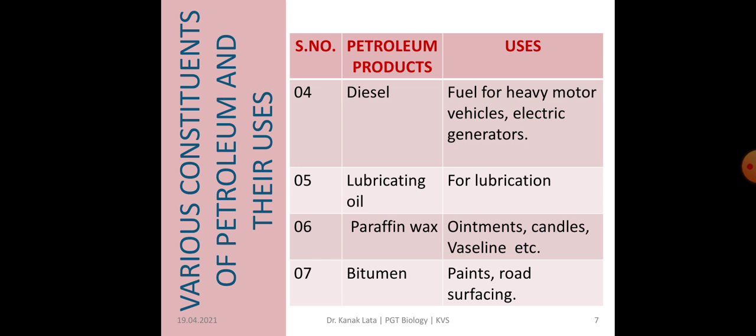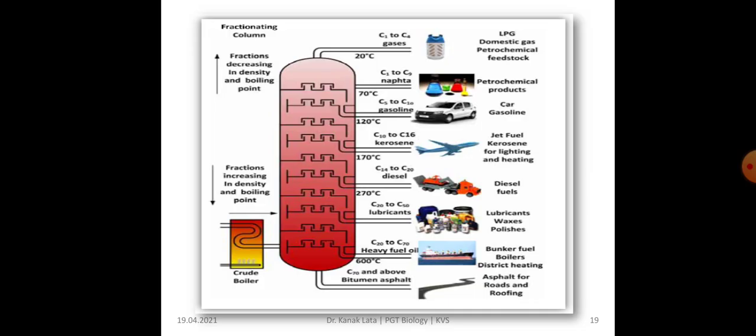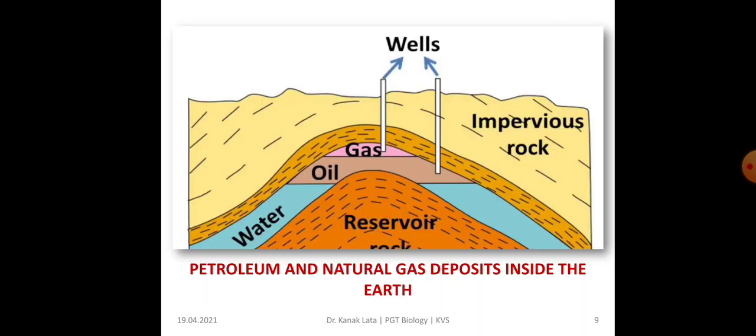So those are the constituents of petroleum and their uses. Here you can see the fractional distillation of petroleum showing different components — all these components are formed at different temperatures. Here you can also see the petroleum and natural gas deposit inside the earth, and how from the well the gas and oil are extracted from inside the earth.